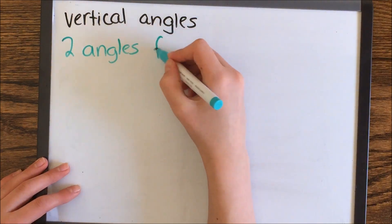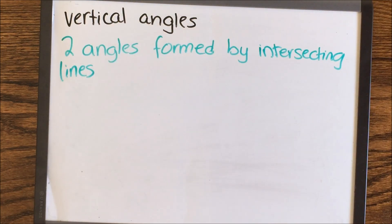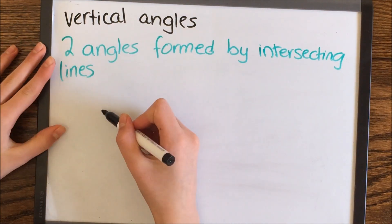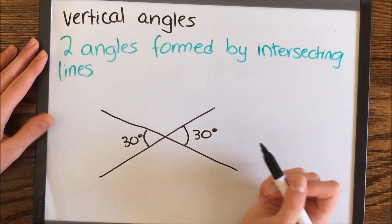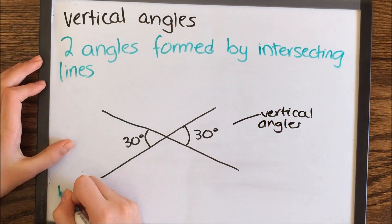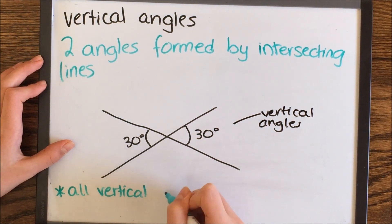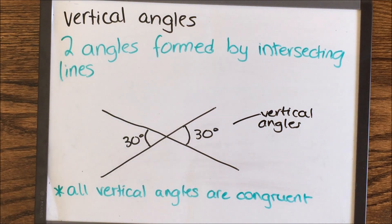Vertical angles are two angles formed by intersecting lines, and vertical angles are always congruent or equal.